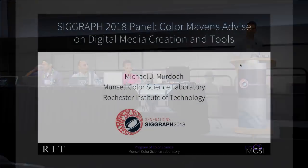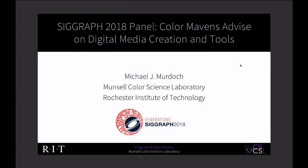Good morning, everybody. My name is Mike Murdock. I'm an assistant professor in the program of color science at RIT. If you didn't know there was a color science degree, there are only a handful of places in the world where you can really study that, and we're proud to be one of them. My background is a mix of engineering, computer graphics, and human-technology interaction, and my research topics typically include displays, lighting, and recently augmented reality.